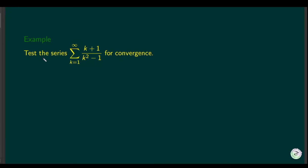Let's look at another example. We are asked to show that this series diverges. For very large values of k, the plus 1 in the numerator is negligible compared to k, and the negative 1 in the denominator is negligible compared to k squared. So for large k, the series behaves like k over k squared, which is 1 over k.